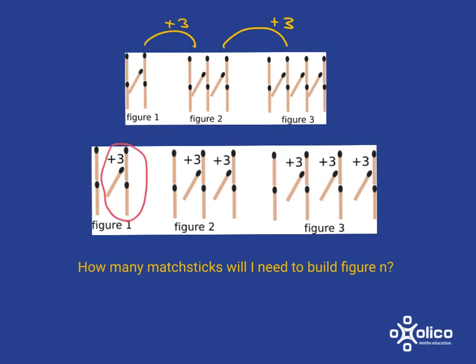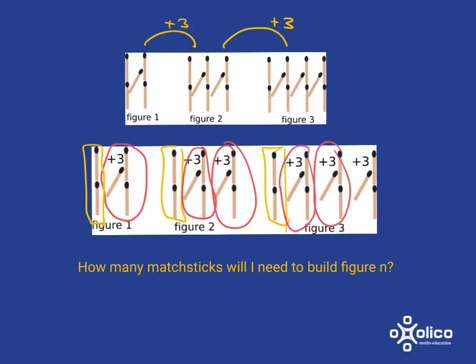You start with 2 of them sitting like that and you add on 3. Then for figure 2, you start with that and now you've got those ones but now you add on another 3, so it's 2 lots of 3. Then for figure 3, you start with that but then this time you've got those 2 and then a third one, 3 lots of 3.